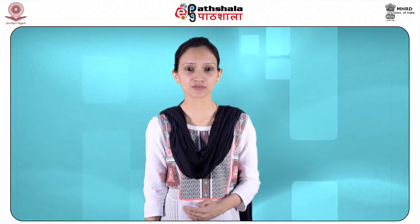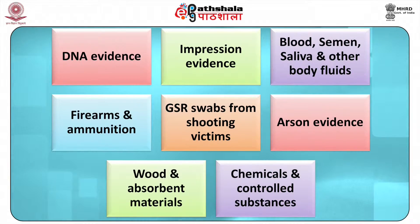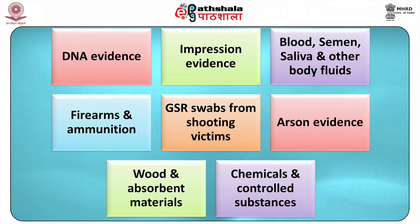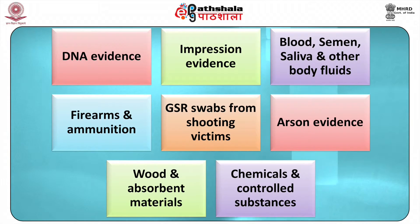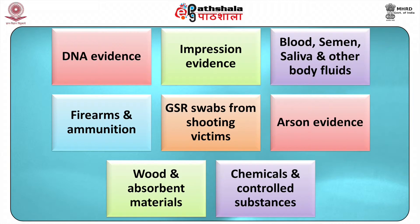First, evidence encountered at the crime scene. Depending on the crime occurred, various types of evidences are recovered from the crime scene. An investigating officer may encounter DNA evidence, impression evidence such as fingerprint and shoe print, blood, semen, saliva and other body fluids, firearms and ammunition such as gun, bullet, shells, and GSR — that is gunshot residue swabs — from shooting victims.